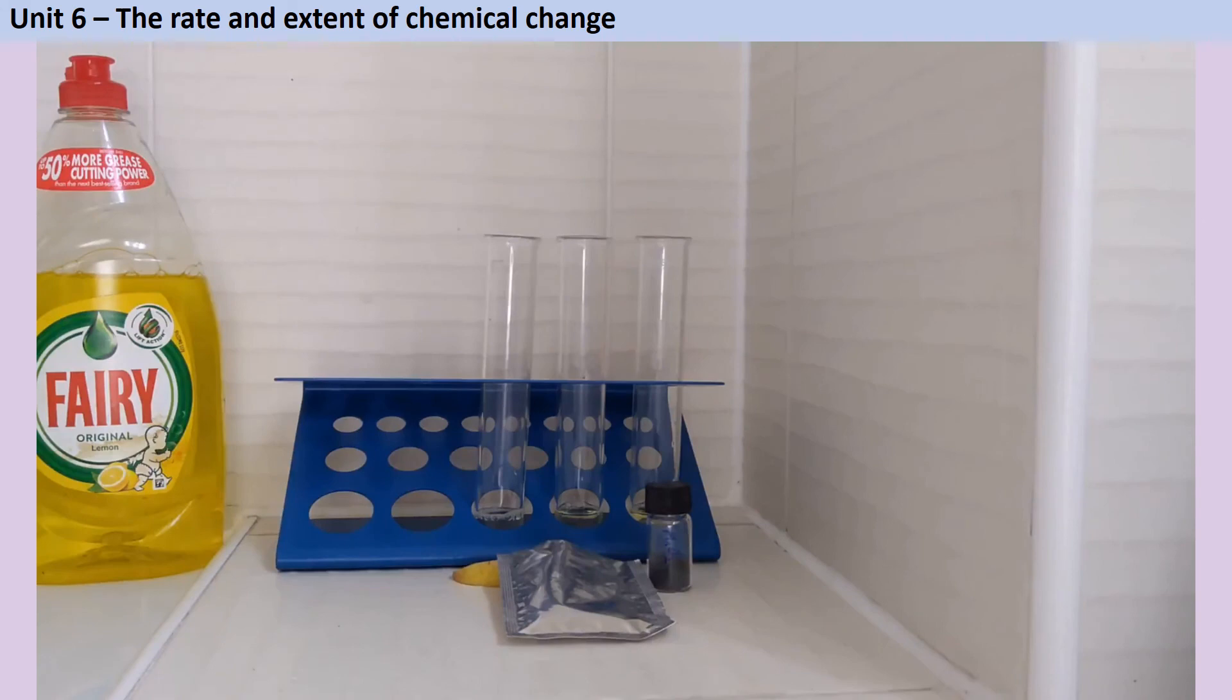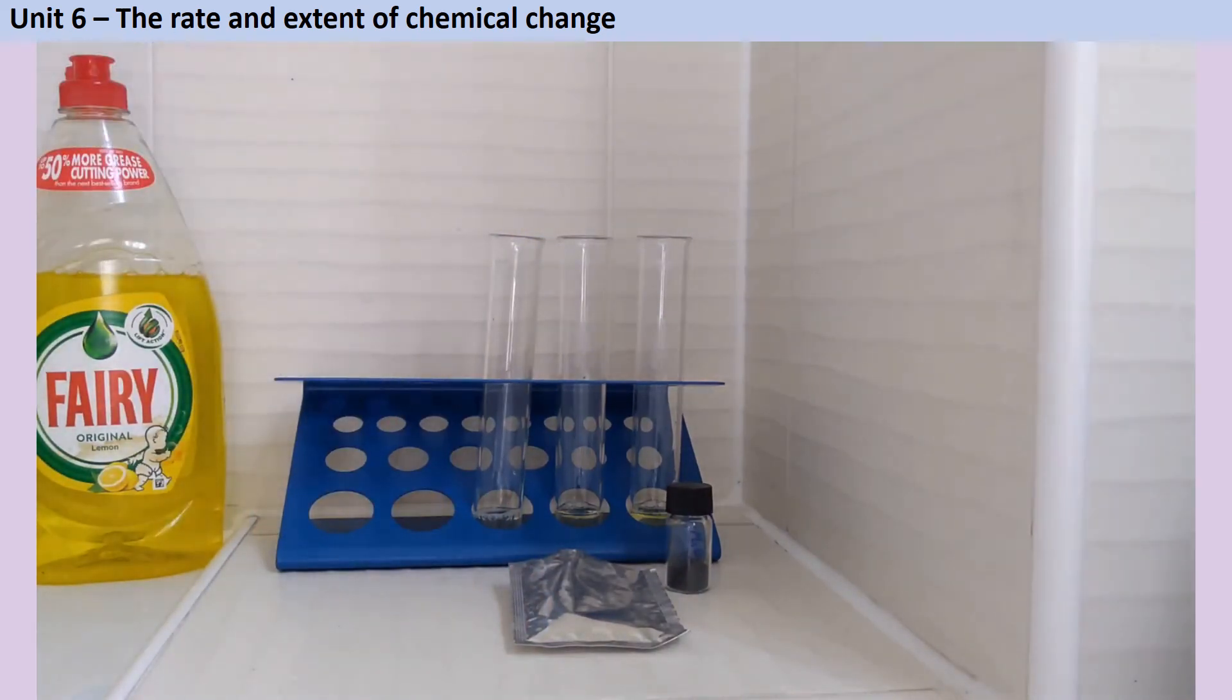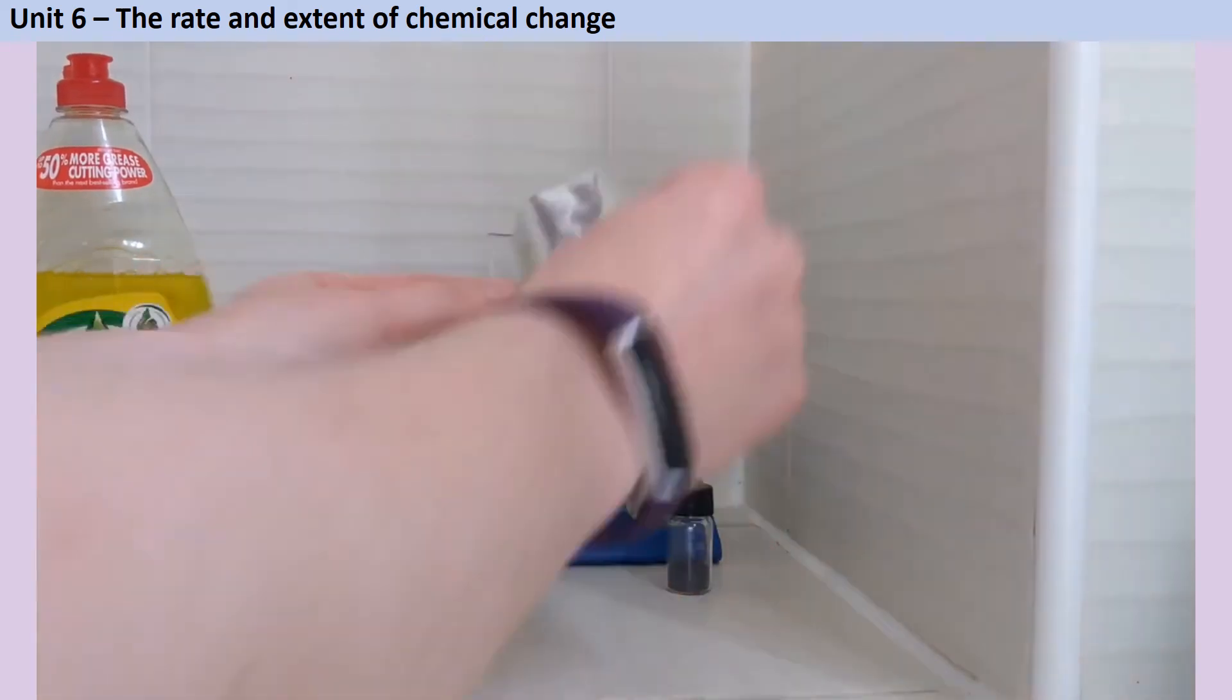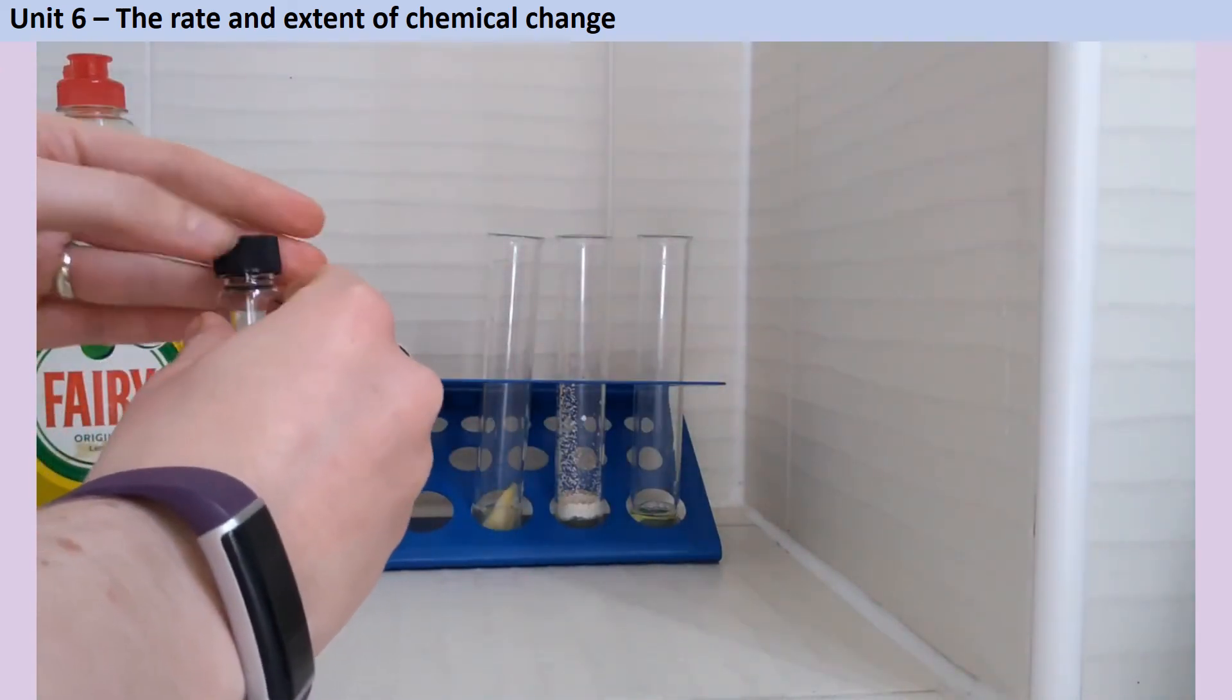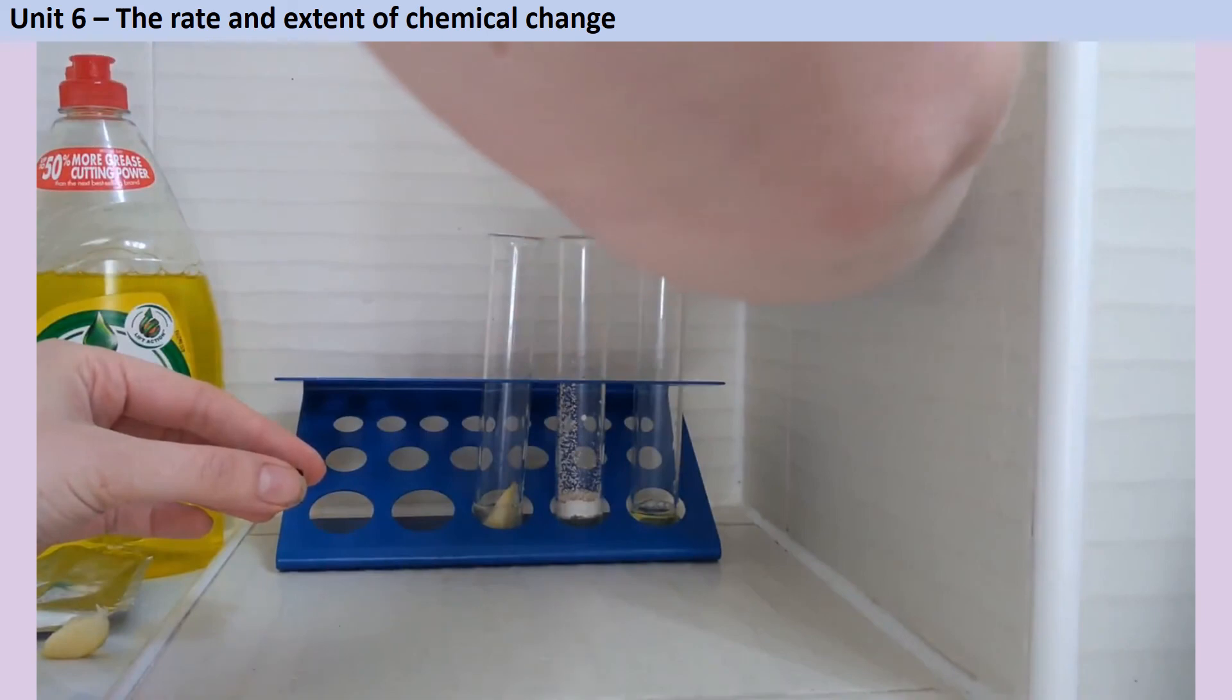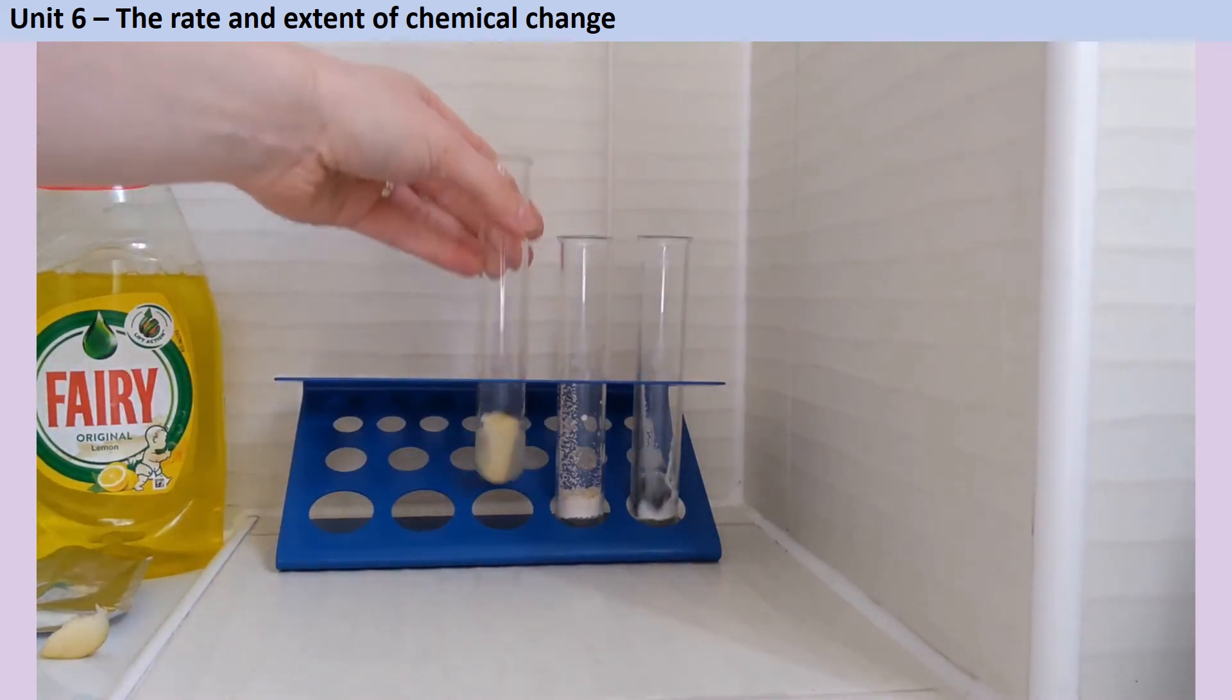Remember that in each instance, the catalyst is going to speed up the rate of reaction, but it's still the same reaction happening, just faster. Each tube contains the same amount of hydrogen peroxide and washing up liquid. Let's see which one of these is the best catalyst.